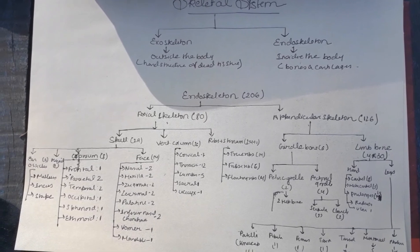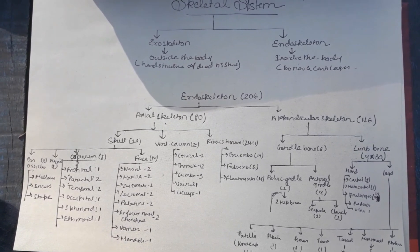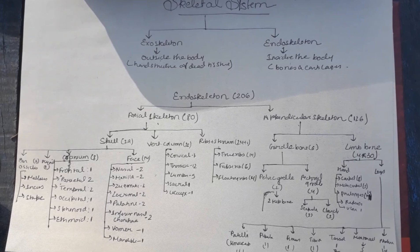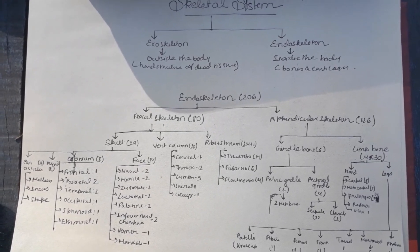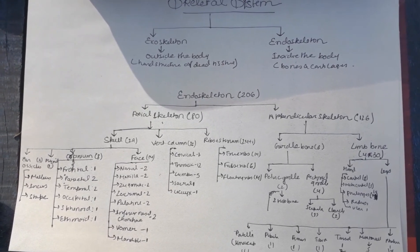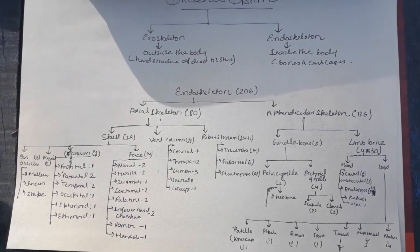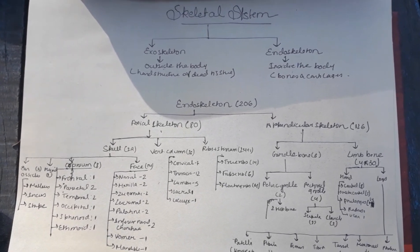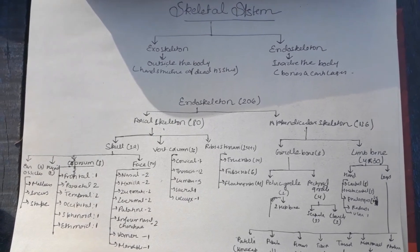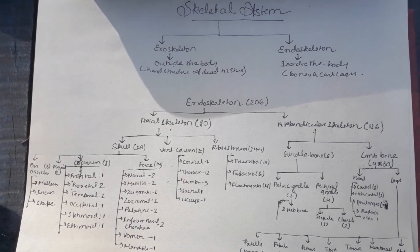Now this endoskeleton is divided into two groups: first, axial skeleton, which includes 80 bones, and appendicular skeleton, which includes 126 bones. The axial skeleton refers to bones present along the mid-axial line.